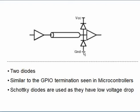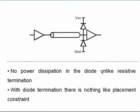This is similar to the termination seen internal to GPIO pins. The reason Schottky diodes are used here is because of their low voltage drop — that's the major advantage. In previous terminations like parallel, AC, and series termination, a major disadvantage is power dissipation across the resistor, which is a critical concern especially in battery-powered applications.